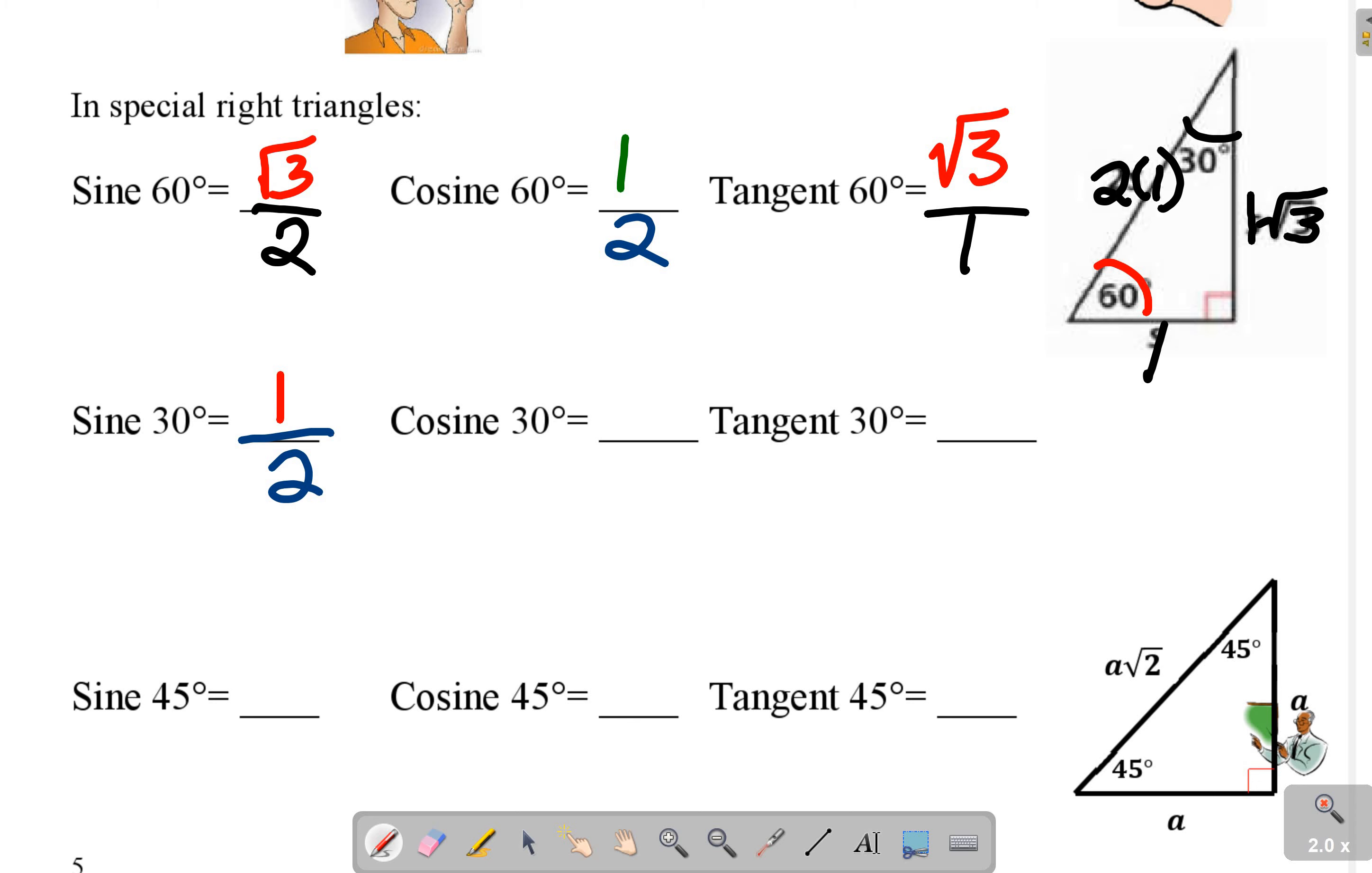Cosine is adjacent. In this case, it's root 3 over our hypotenuse, which is 2. Tangent is opposite, which in this case is 1 over adjacent, which is root 3. We can't leave that there. We multiply top and bottom by root 3. So we end up with root 3 over 3.